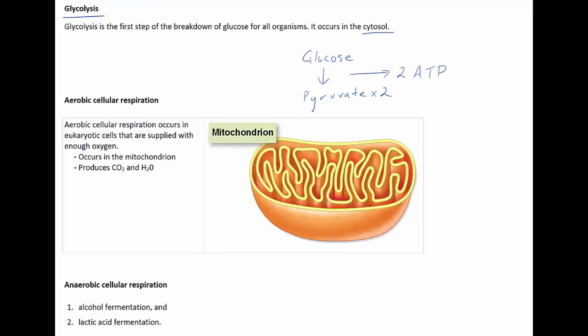In eukaryotic cells that are supplied with enough oxygen, the two pyruvate molecules formed in glycolysis enter into the mitochondrion, where oxygen is present. A series of steps occur within the mitochondrion that result in the production of 34 ATP molecules. Oxygen is a critical reactant in this process. Carbon dioxide and water are also products of this reaction. This means that aerobic respiration yields a total of 36 ATP when you combine the two ATP produced in glycolysis and the 34 ATP that were produced in the mitochondrion.